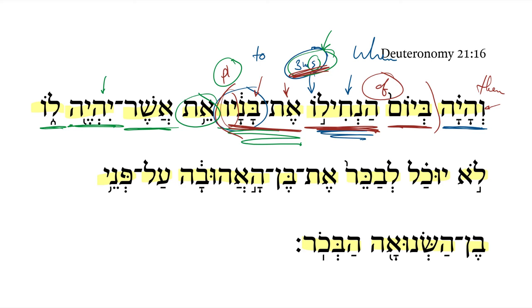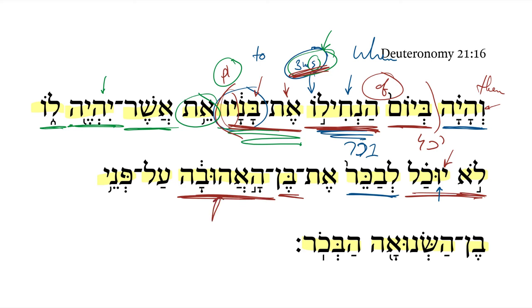There's a qal imperfect third masculine singular of hayah. Next we get the negation: he is not able. There's a qal imperfect third masculine singular of the verbal root yod-kaf-lamed. That one morphs a little differently — you see this shurek dropping in here: yuchal. He is not able to choose — here's the piel infinitive construct plus a lamed preposition of bet-kaf-resh. He is not able to choose the son of the loved wife — there's that passive participle again — over against, or instead of, the son of the hated wife, passive participle there.